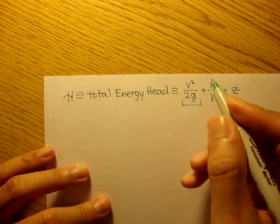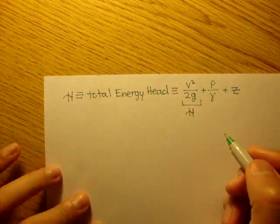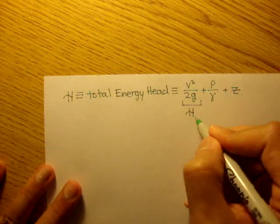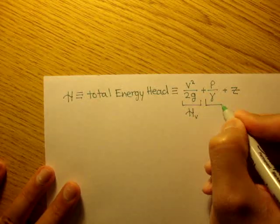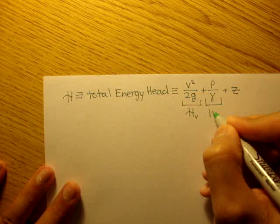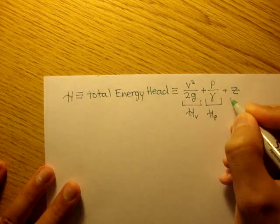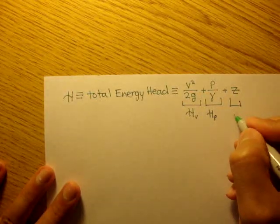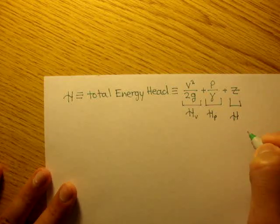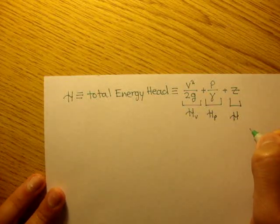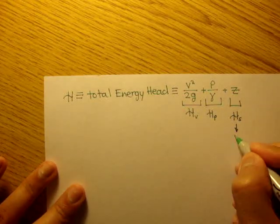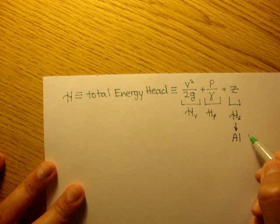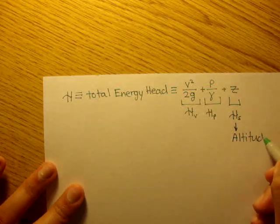This term here is usually defined to be the energy head of velocity, so we denote it HV. This right here is a pressure head, and this is HS, and I believe that stands for position. And remember, this is just altitude.